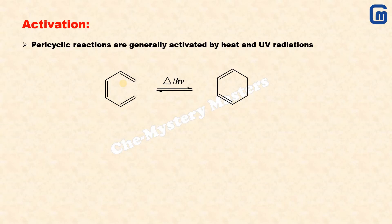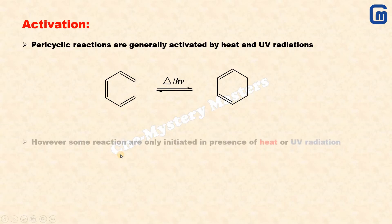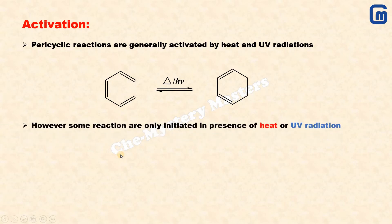Once excited to the next energy level, the electrons cover the activation energy barrier and are converted into their possible products. As shown here with an electrocyclic reaction example, a cyclic movement of electrons takes place — either clockwise or anti-clockwise — resulting in the formation of new bonds, loss of certain pi bonds, and gain of a sigma bond. Certain reactions can only occur in the presence of heat or light.